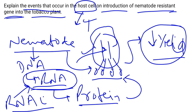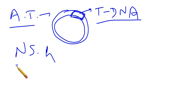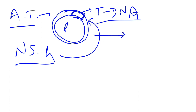For RNA interference, we use Agrobacterium tumefaciens, a bacterium which has a Ti plasmid. This plasmid contains a segment known as T-DNA, which is responsible for infection to the plant and causes tumors. What we are going to do is replace this T-DNA with our desired nematode specific genes, making this a recombinant plasmid.